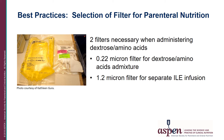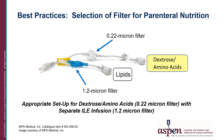A 0.22 micron administration filter is used for the dextrose amino acids and a 1.2 micron filter for the lipids. This diagram illustrates the appropriate filter setup for administering a dextrose amino acids admixture with a separate infusion of lipids. The dextrose amino acids admixture is filtered with a 0.22 micron in-line or add-on filter. The second filter, a 1.2 micron filter, is for the lipids, which is infused by means of a Y connector placed closer to the patient than the 0.22 micron filter. Alternatively, the lipids may be administered via a separate vascular access device with a 1.2 micron in-line or add-on filter.